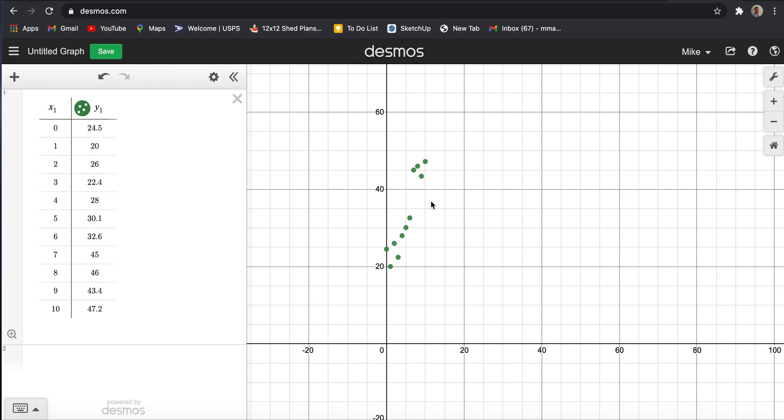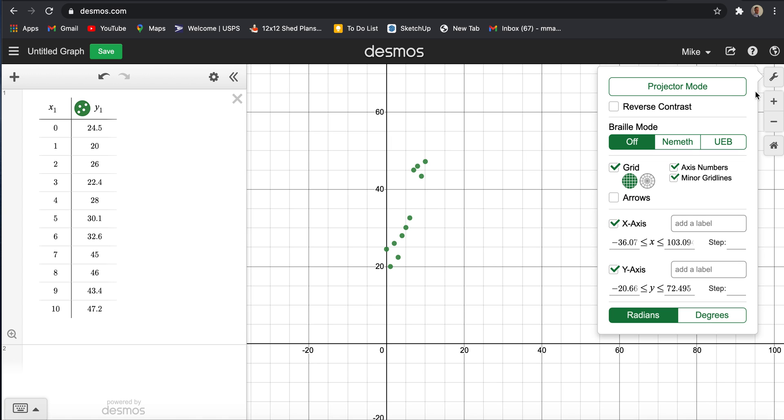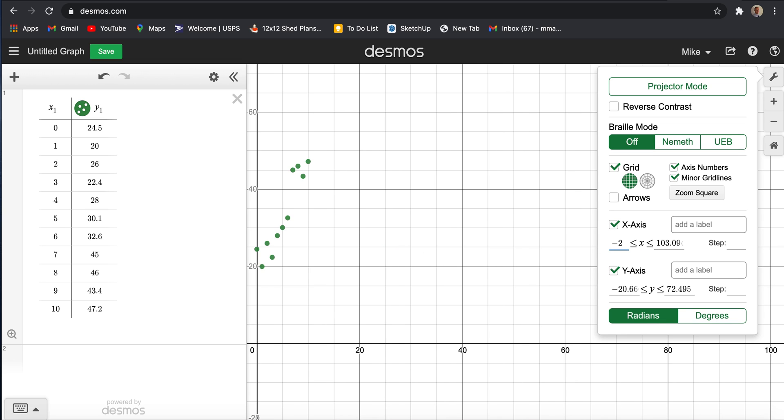The way that I recommend you shrink the window down is by clicking the settings icon in the upper right corner and then adjusting the scale. So my X axis, I have no values less than zero, so I'm gonna go to negative two to make it a little bit smaller. And the greatest X value I have is 10, so I'm gonna change that to 12.